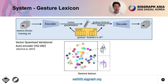More specifically, we encode each training motion block into a vector, and look up a gesture lexeme that is the most similar to the vector in the gesture lexicon. Then the selected lexeme is passed through the decoder to reconstruct the original motion block. After training the vector quantized variational autoencoder, we can learn a categorical motion representation.